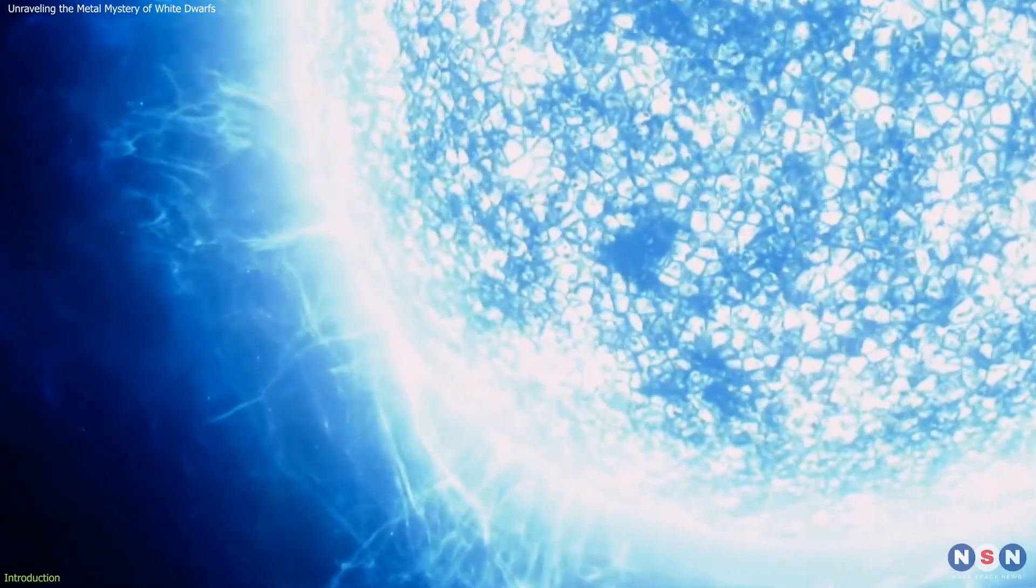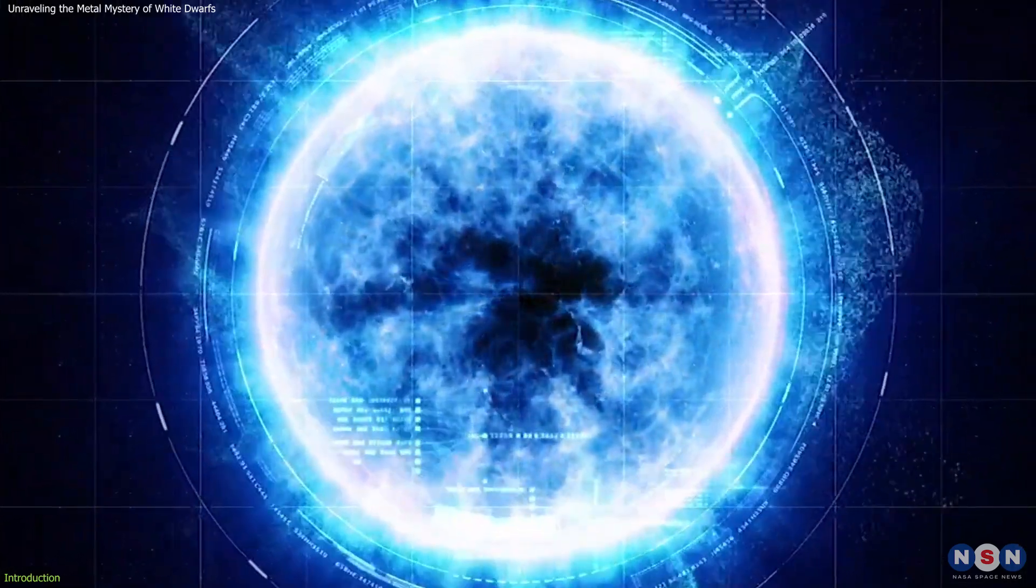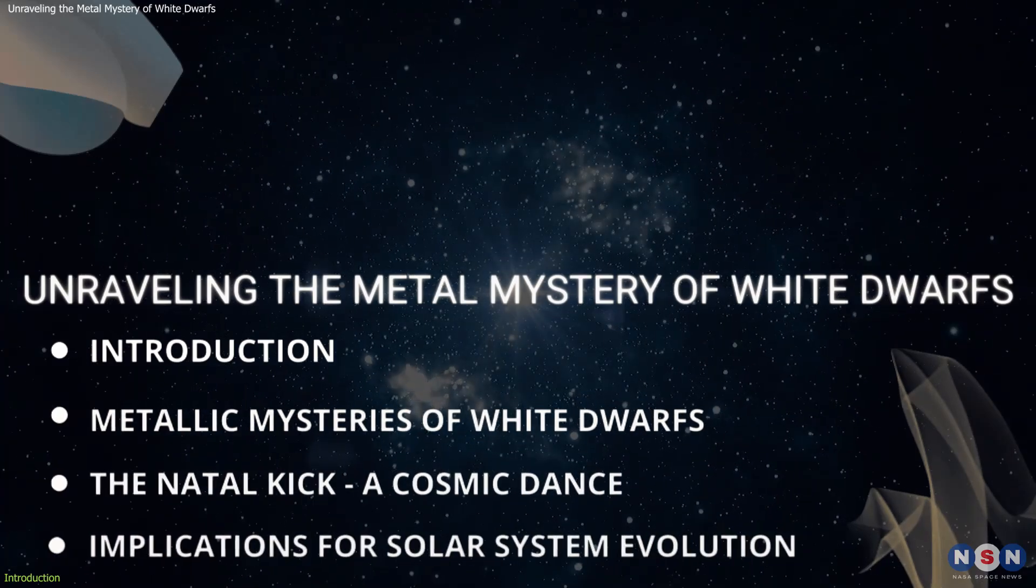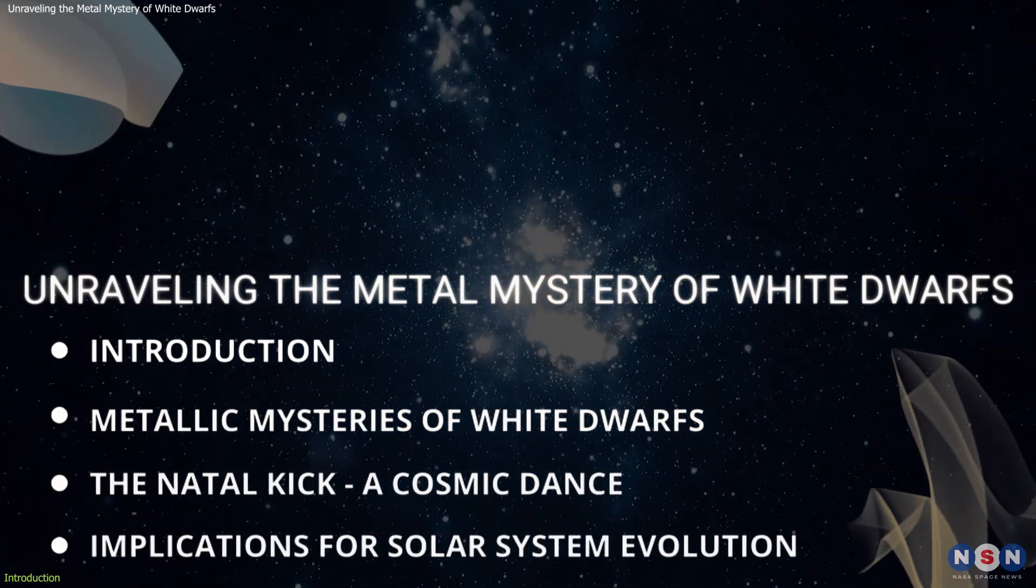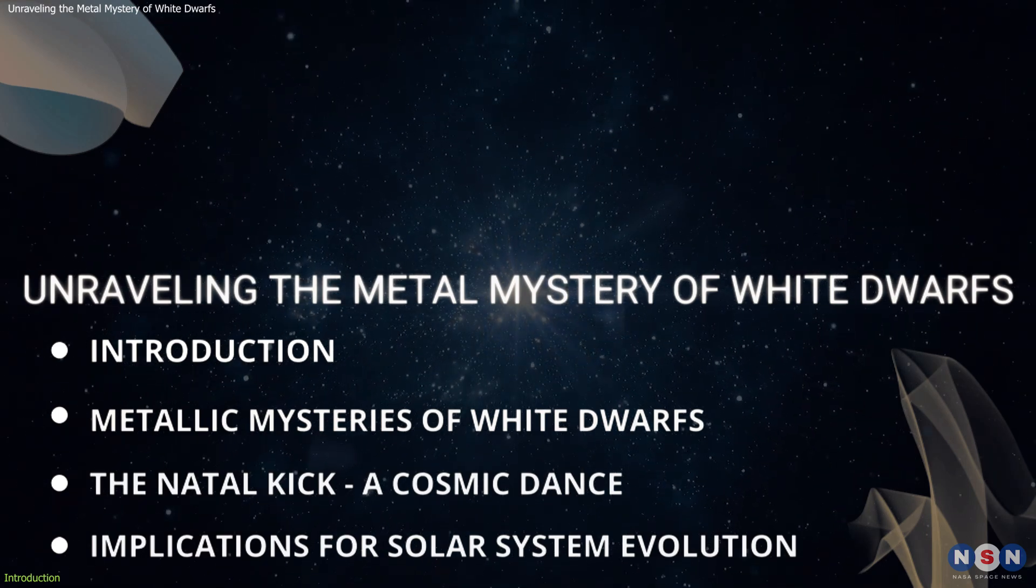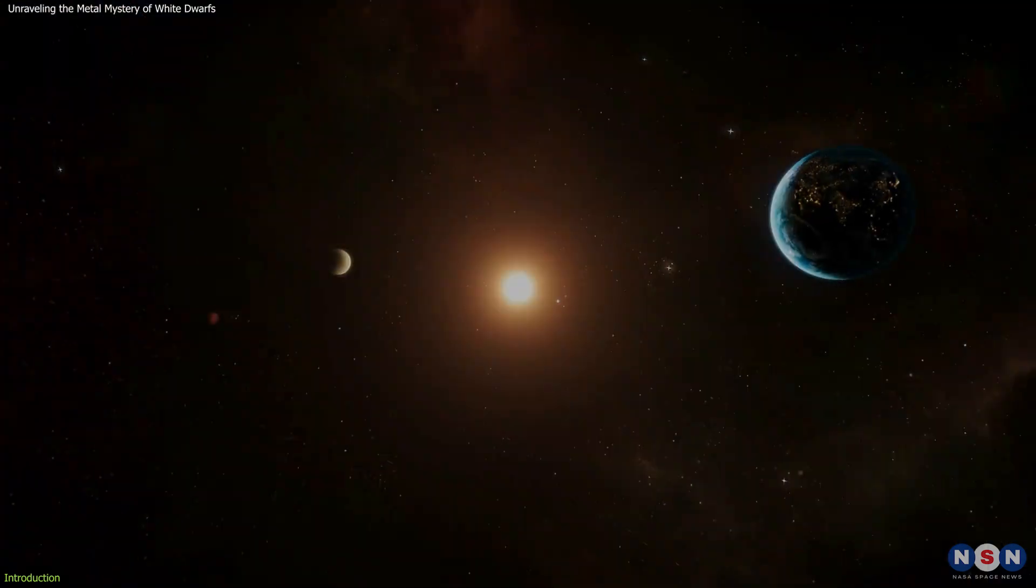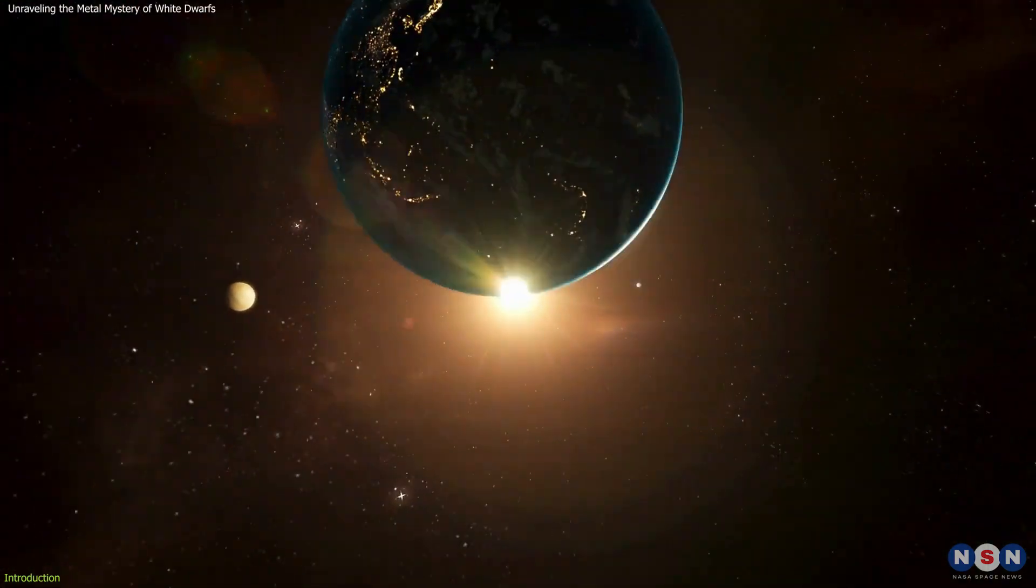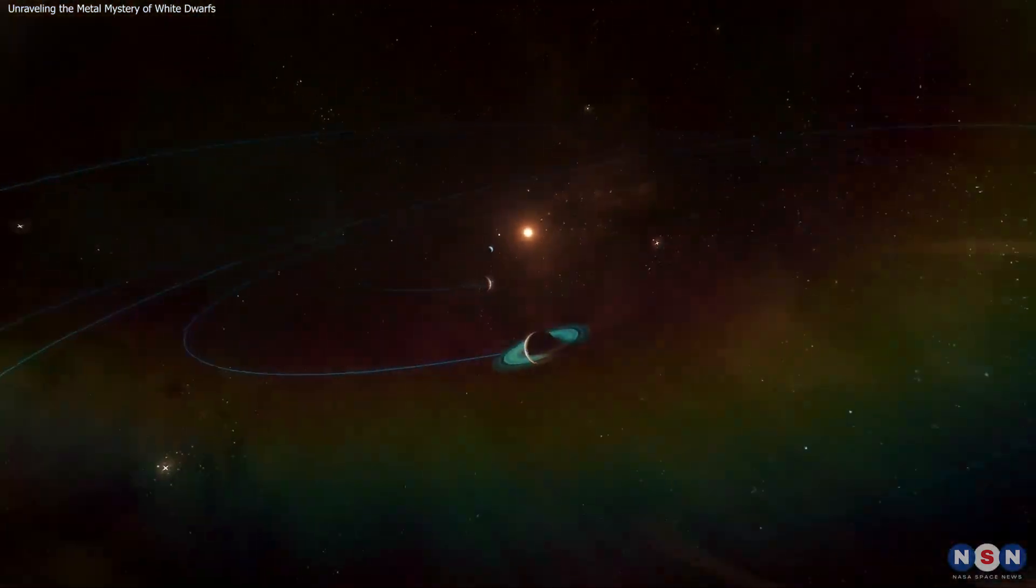This transformation signals the end of active nuclear burning and the start of a stable, yet mysterious phase. In this video, we will explore the mysterious presence of heavy metals on the surfaces of white dwarfs, delve into the dynamic processes that contribute to this phenomenon, and uncover what these stellar remnants reveal about the future of solar systems. So without further ado, let's get started.